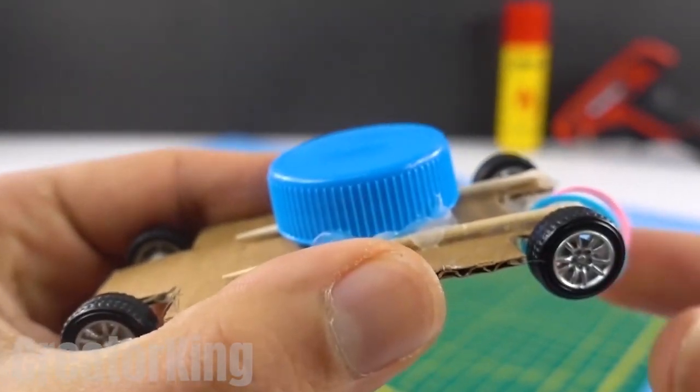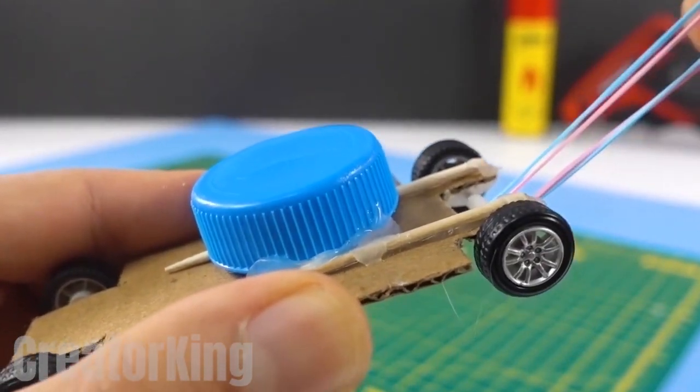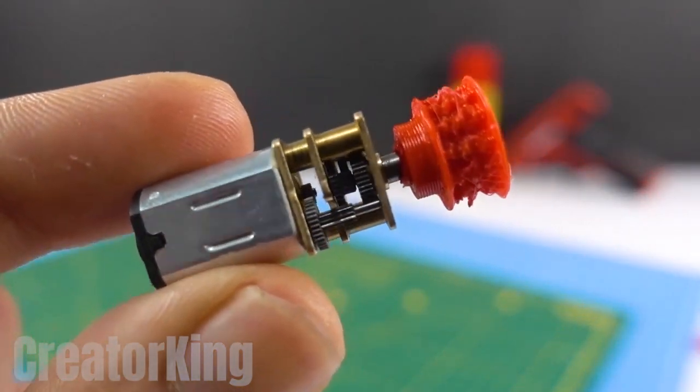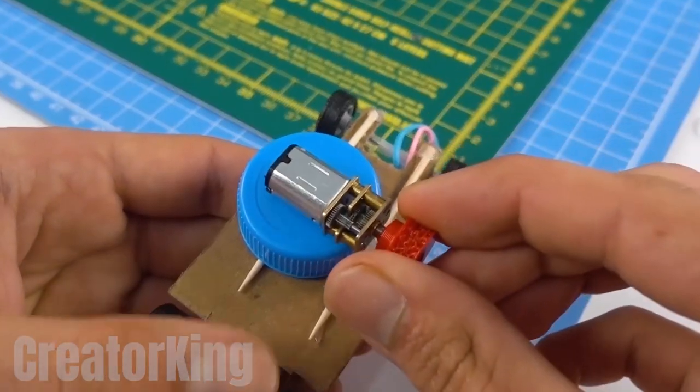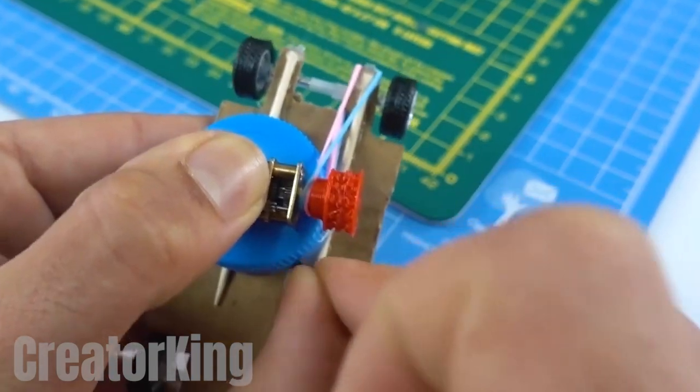It reminds me of those lawnmowers from the famous Plants vs. Zombies game. Get a toy motor and a 3D printed piece, which we will glue on top of the cap and attach the rubber bands to the pivots.